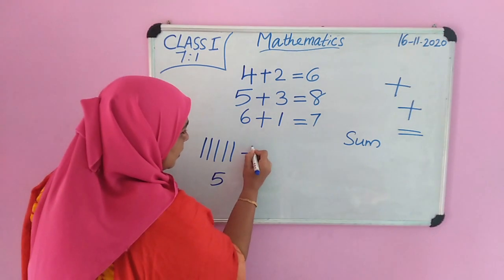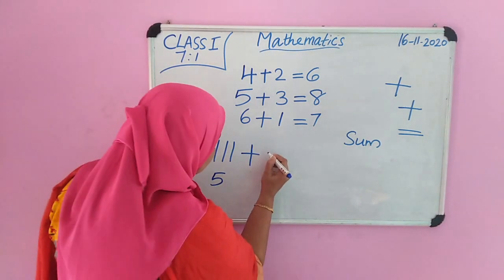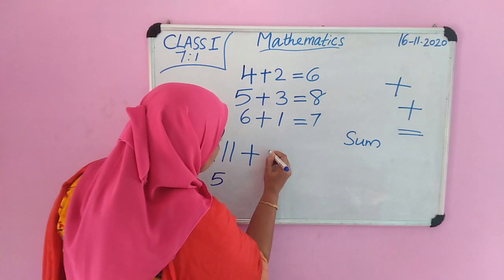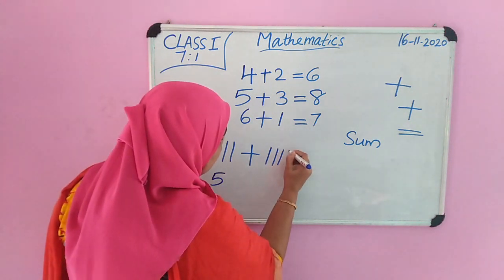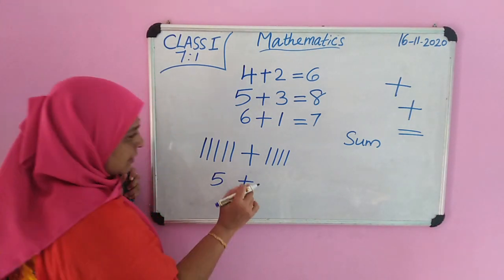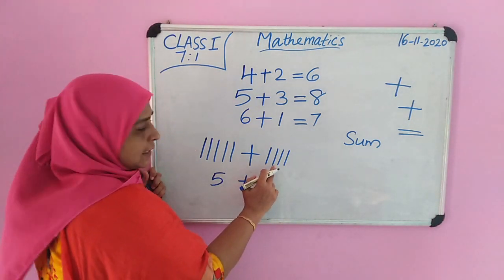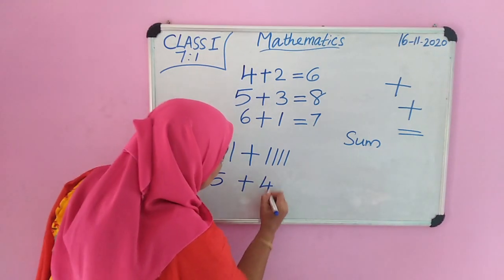Symbol for addition plus. Start counting. 1, 2, 3, 4. Plus. How many lines here? 4. 1, 2, 3, 4. 4.